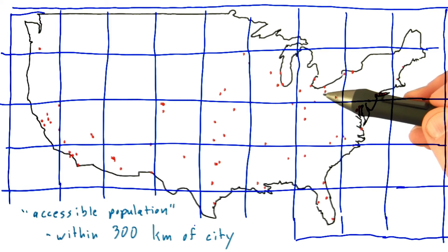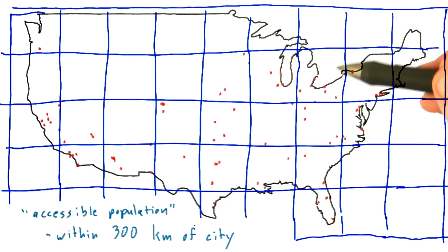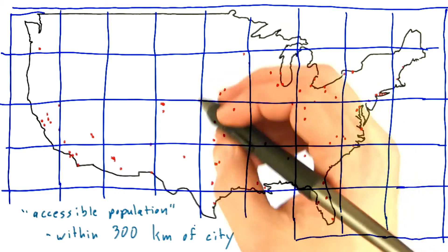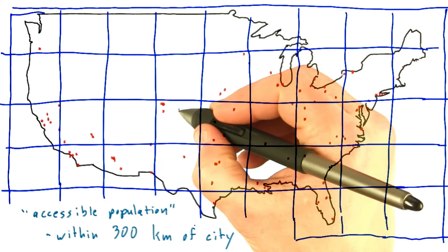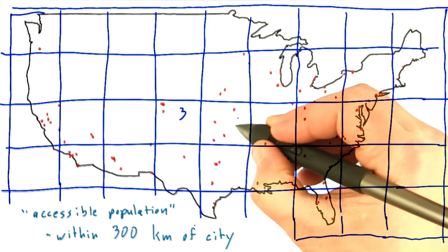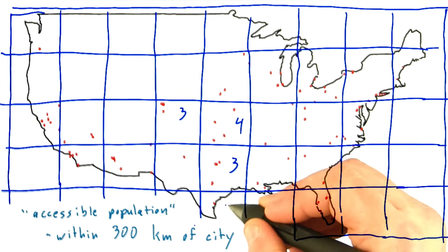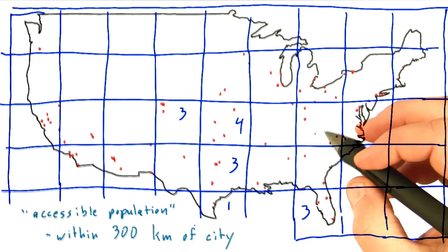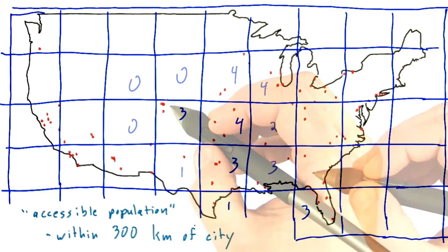Instead, we could create a spatial data structure by overlaying a 300-kilometer grid onto the map and then creating a list of cities that fall into each grid cell. So this cell would be empty, this one would have three cities, this one would have four cities, and so on. We could make a list of all of the cities that fall into each grid cell.